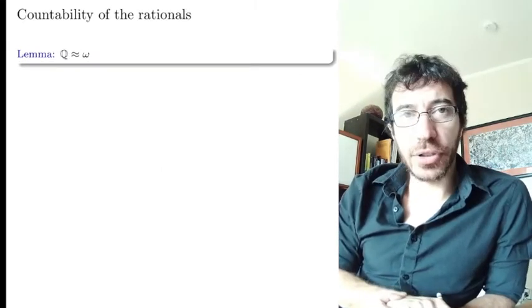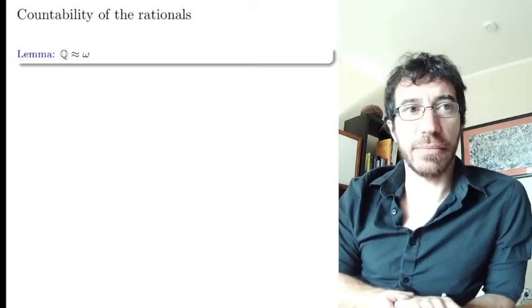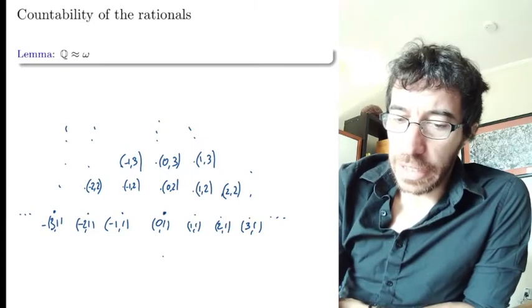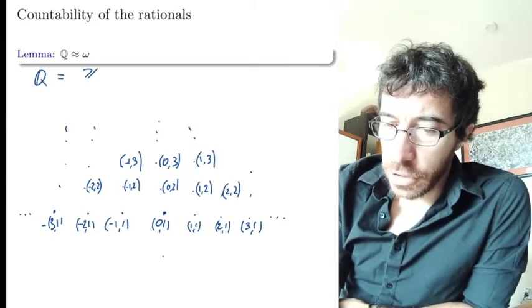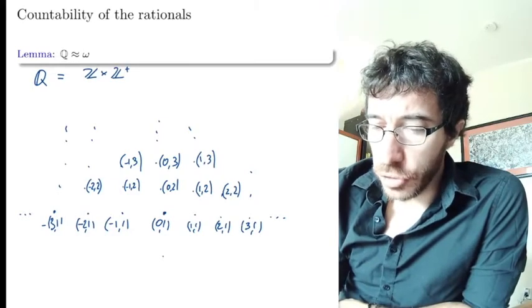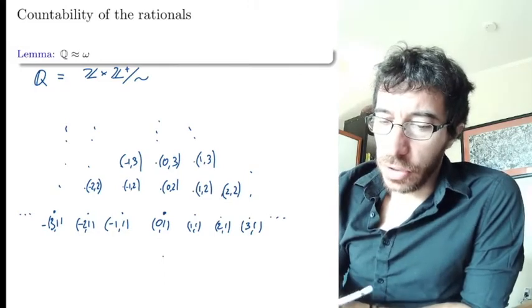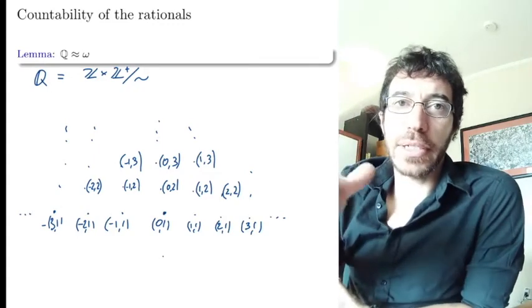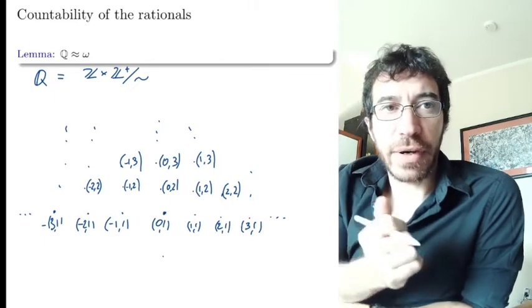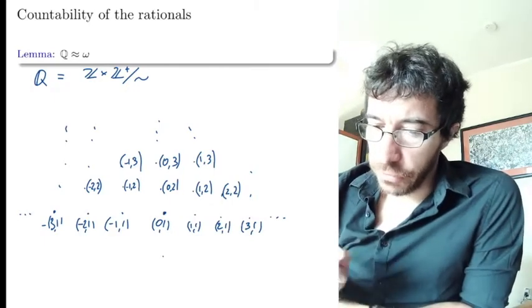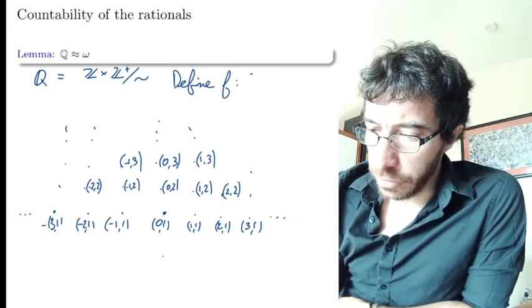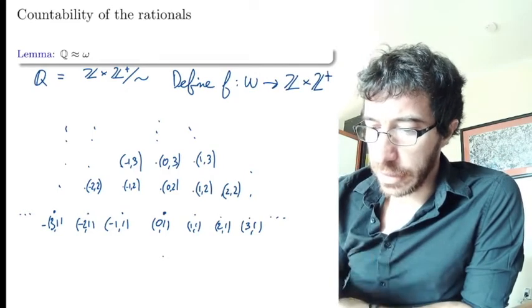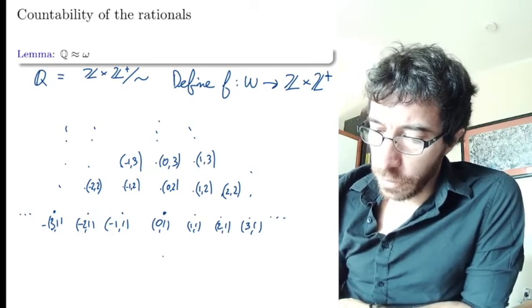Another important example: the rationals are also the same size as the natural numbers. Recall that the rationals were defined as the quotient of Z × Z⁺ modulo an equivalence relation we defined a few classes ago, where a pair (p, q) represents the fraction p/q, and two pairs are equivalent if they represent the same fraction. So now let me define a function f from ω (the natural numbers) to Z × Z⁺.